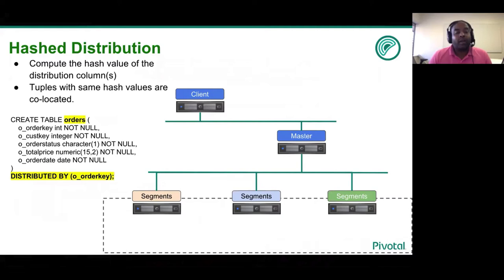Let us revisit the previous example of four tuples in the orders table. When the first tuple with order key one is inserted, the client connects to the master gives this tuple to the master, which then looks up the hashing column. The hashing column in the create table is specified to be order key. Let us for simplicity assume that all orders of order key one will be placed on segment one.